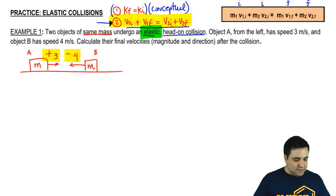Calculate their final velocities, magnitude and direction. Magnitude means the number, and direction means positive or negative.